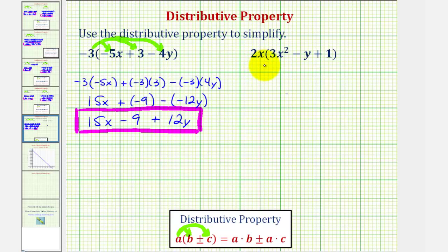Looking at our second example, we have two x times the quantity three x squared minus y plus one. So we'll distribute two x or multiply each term inside the parentheses by two x.